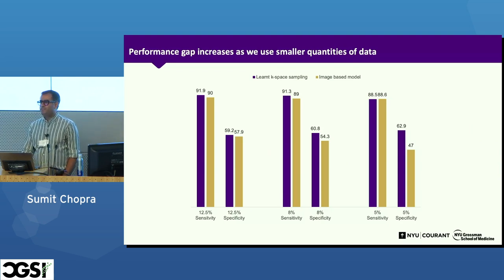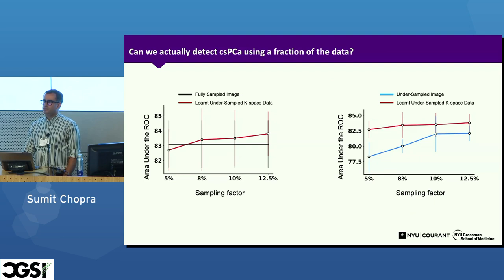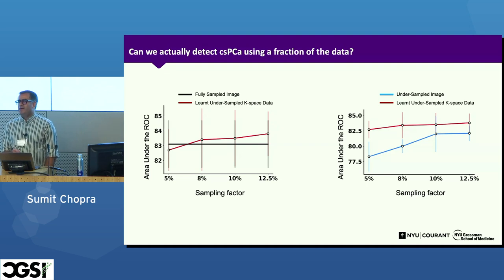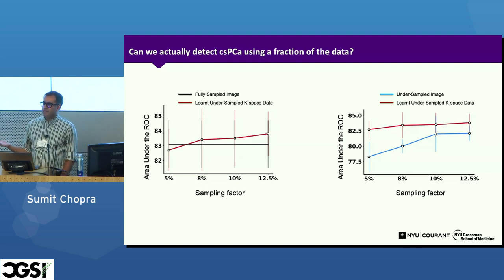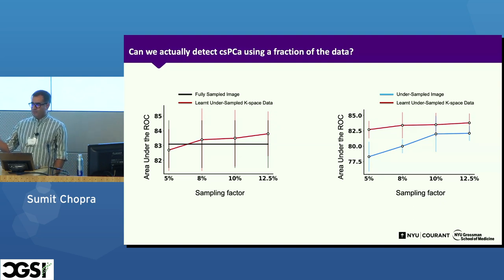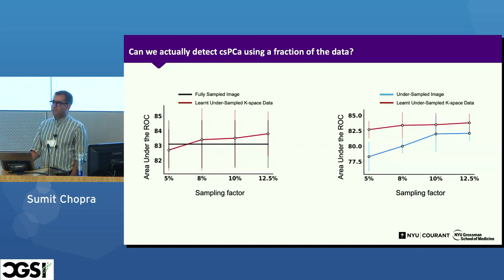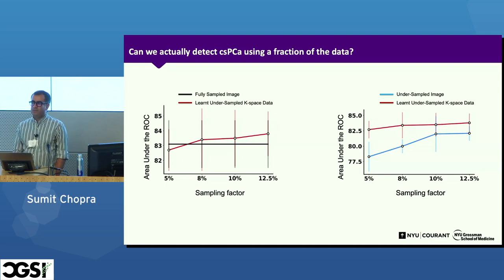Are you comparing performance against what the radiologist would say with the full image, or some other way of determining ground truth? It's actually an even better ground truth than radiologists: it comes from pathology reports — the biopsies. Even among radiologists looking at the image, there's huge subjectivity in whether something is clinically significant; they give a PIRAD score from one to five, with four and five considered clinically significant and three considered somewhat significant. But our ground truth is from biopsy.